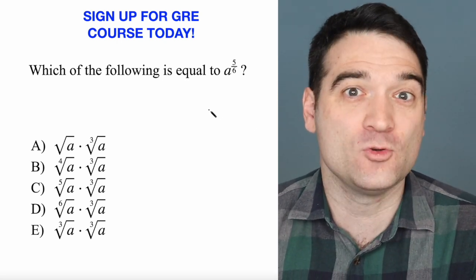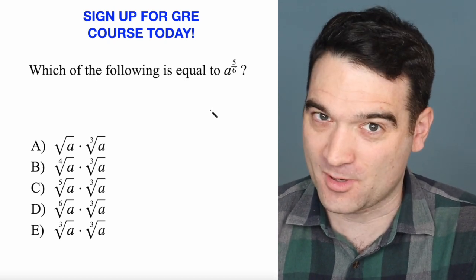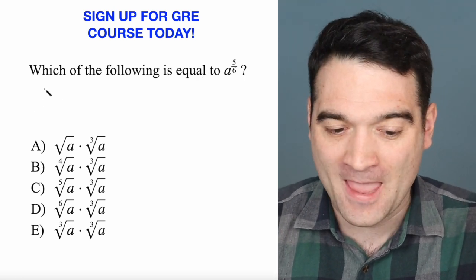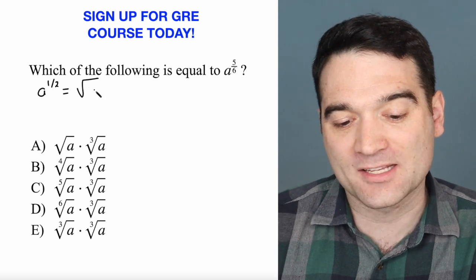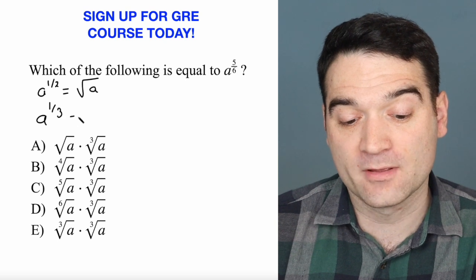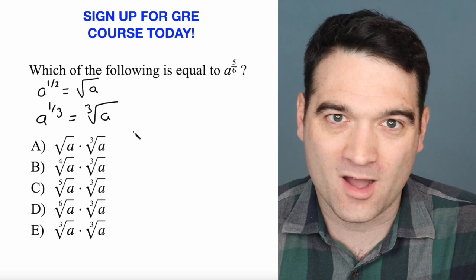So we have to understand what fractional exponents are and how they work to solve this problem. So let's take a look. A quick review of fractional exponents: a to the power of 1 half is the same thing as the square root of a. a to the power of 1 third is the cube root of a, and so on and so forth.